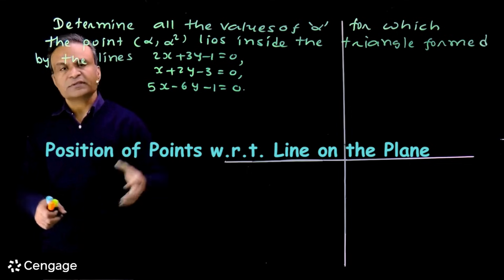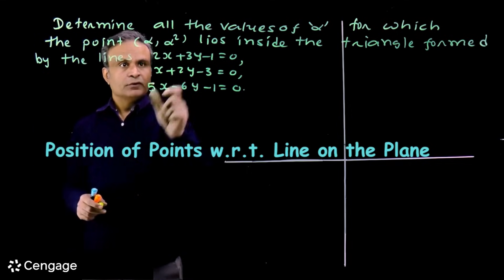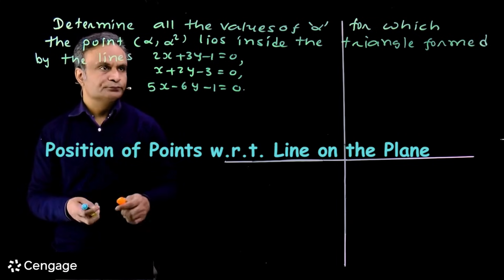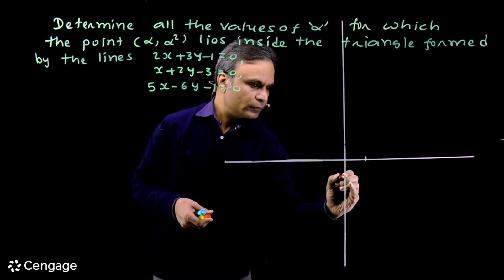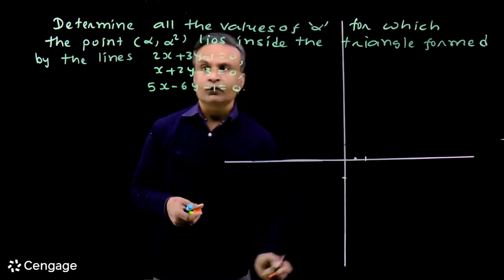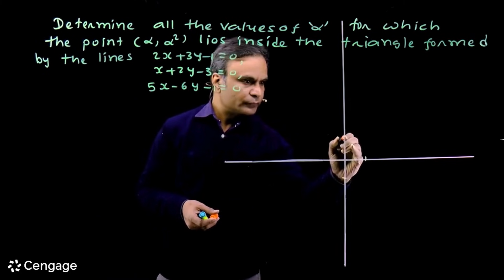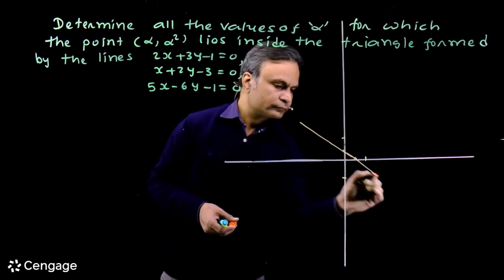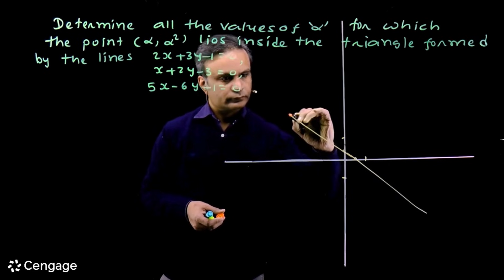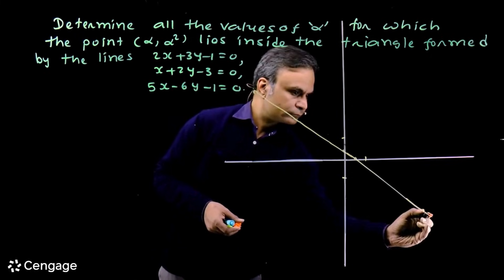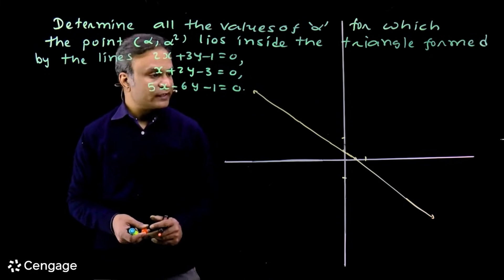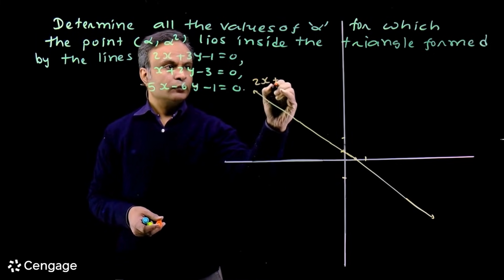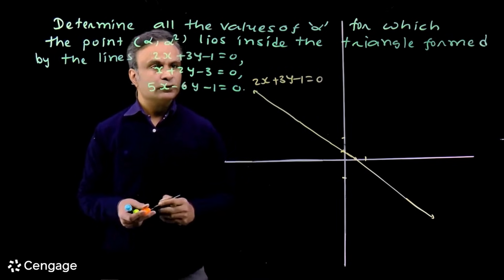To solve this question, we draw these lines on the coordinate plane. For the first line, the x-intercept is 1/2 and the y-intercept is 1/3. So we have this line. We have to draw these lines precisely. This is 2x plus 3y minus 1 equals 0.